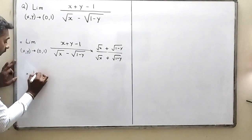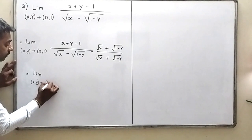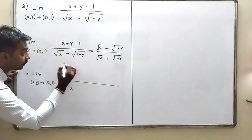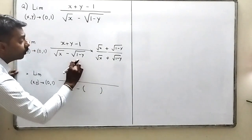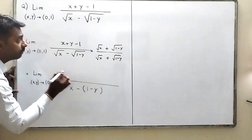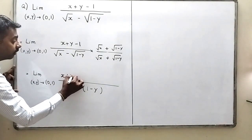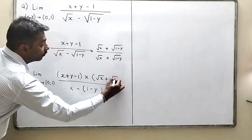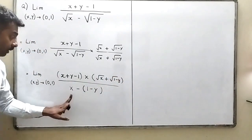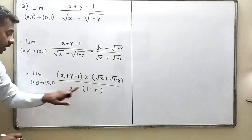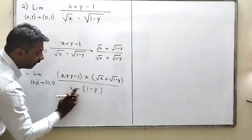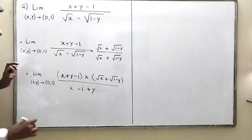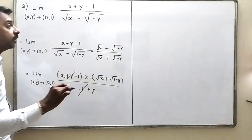The denominator becomes (√x)² − (√(1−y))² = x − (1−y) = x − 1 + y. The numerator is (x + y − 1) · (√x + √(1−y)). Notice x − 1 + y = x + y − 1, so the (x + y − 1) terms cancel exactly.